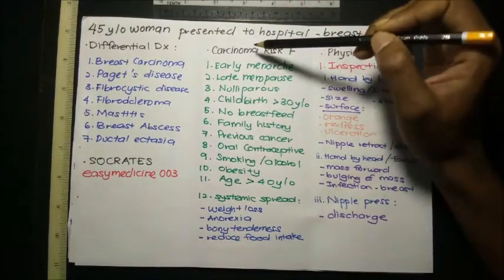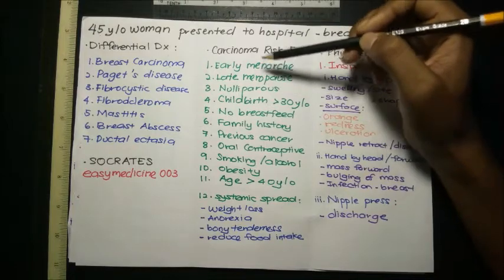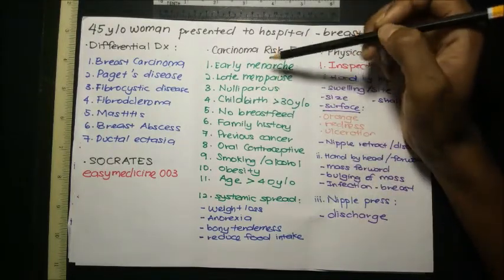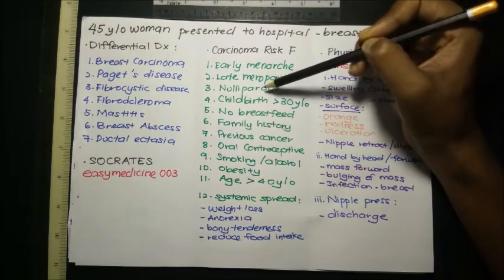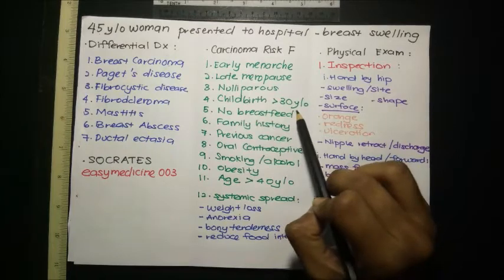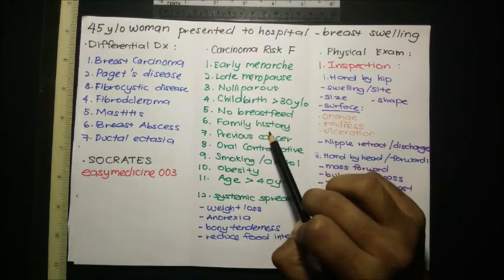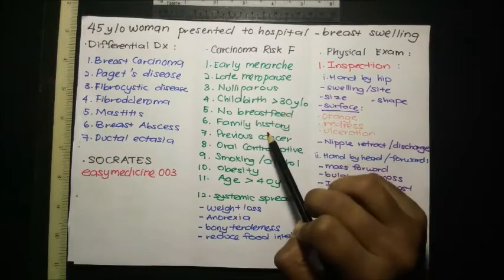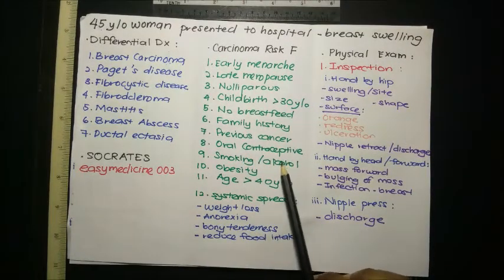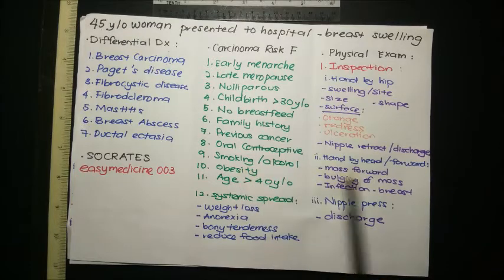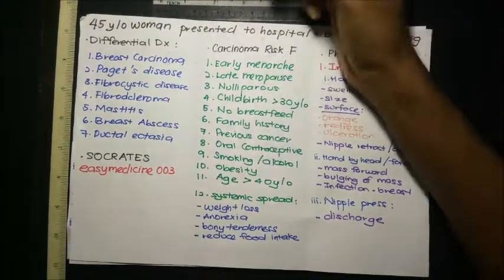To rule in breast carcinoma, there are several risk factors we need to ask about: early menarche (less than 12 years old), late menopause (after age 55), nulliparity, childbirth after the age of 30, never breastfeeding, family history of cancers or specifically breast carcinoma, previous personal cancer history, use of oral contraceptive pills, smoking, alcohol history, and obesity.